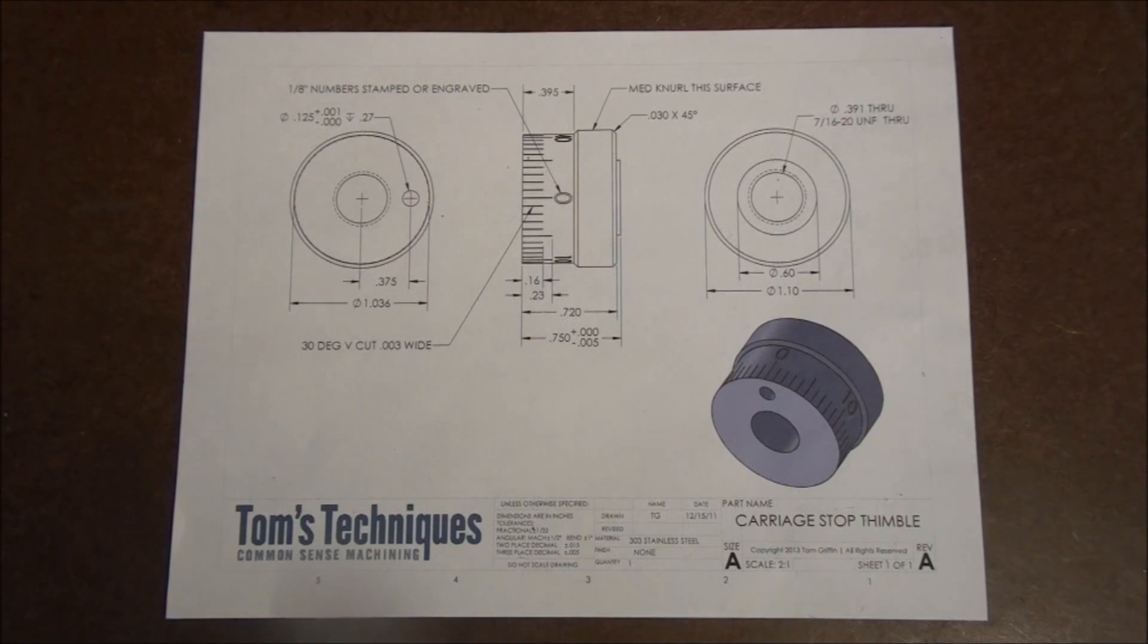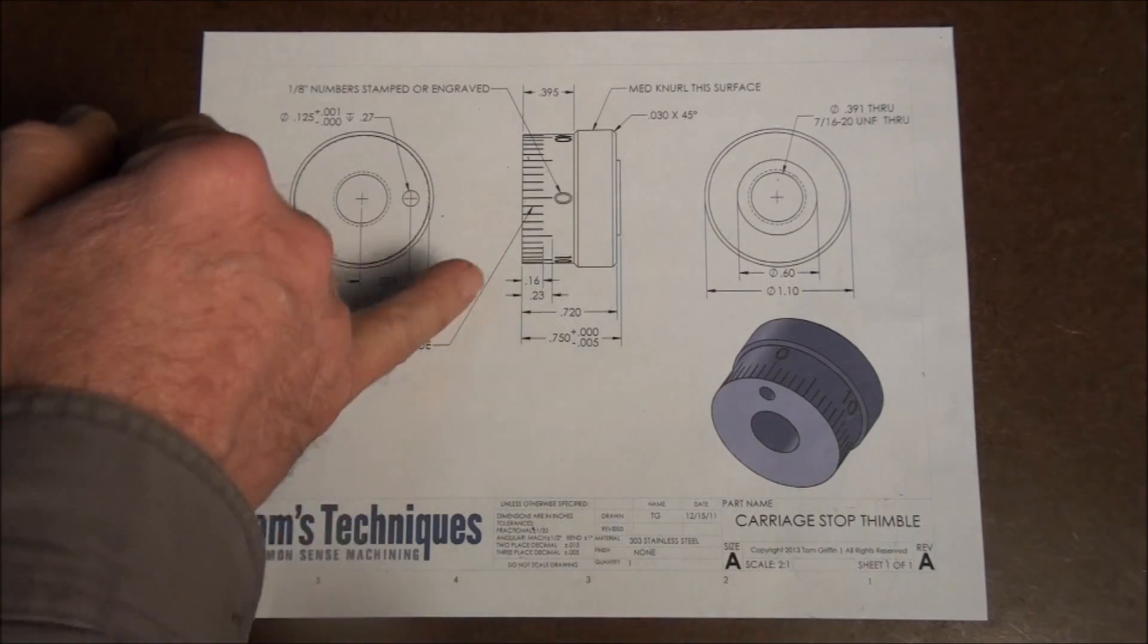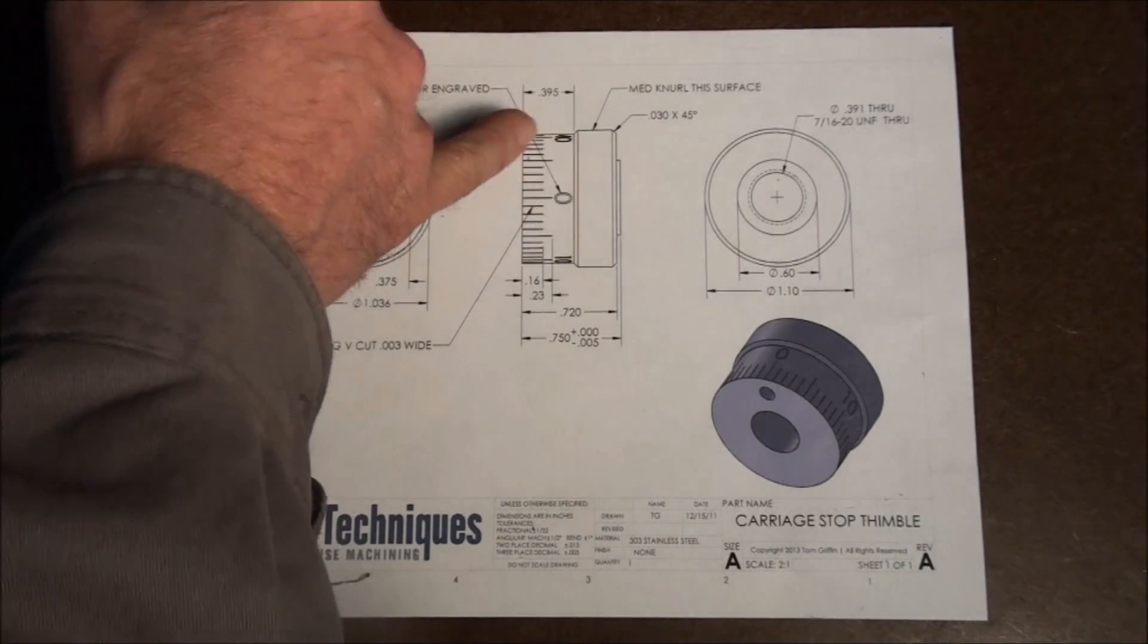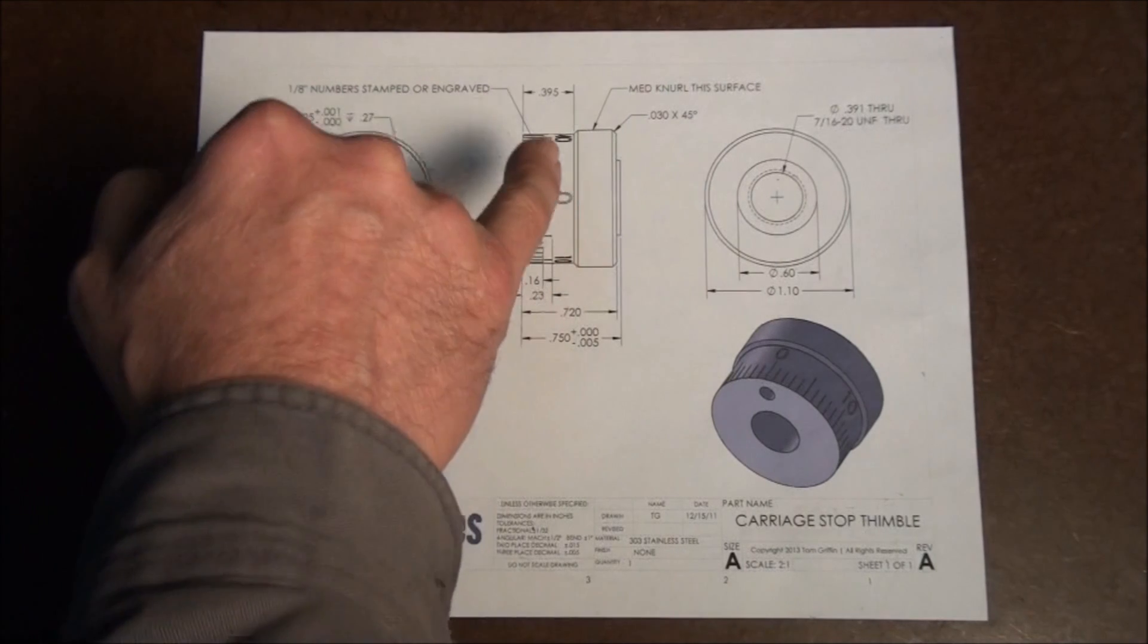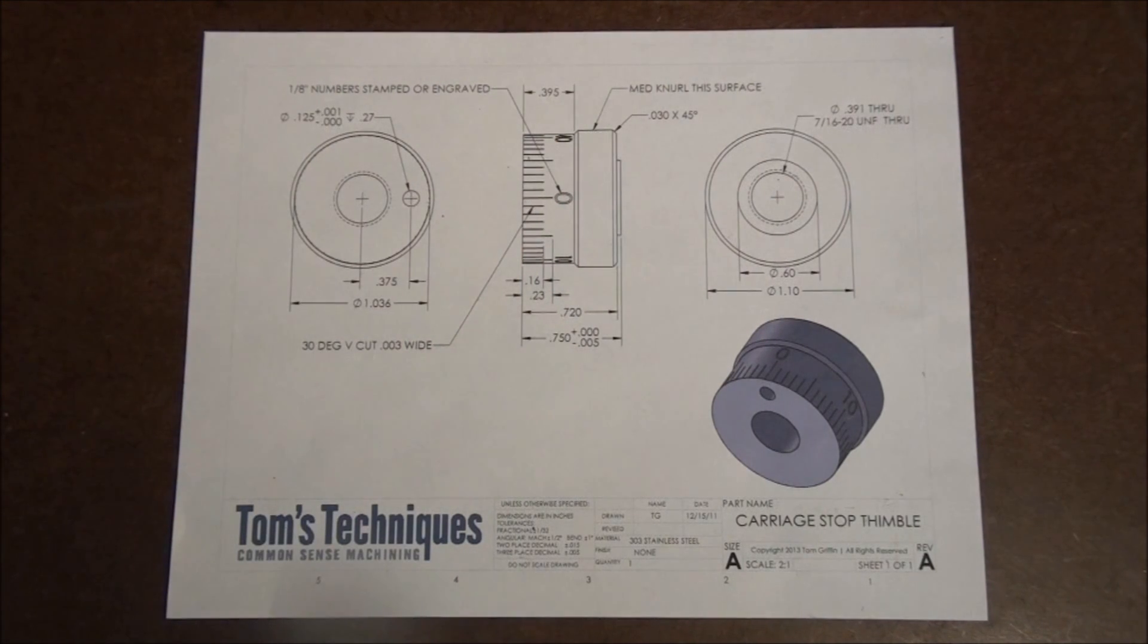And also there are several operations that are a little bit out of the ordinary. So we're going to have to figure out a way to hold the part and to fixture the part in order to cut these divisions, for instance, around the thimble and also stamp the numbers. Those are two special setups we're going to have to work out according to what we have on hand. The way I do it's going to be a little bit different probably than the way you do it because you won't have the same tools at your disposal as I do and vice versa.